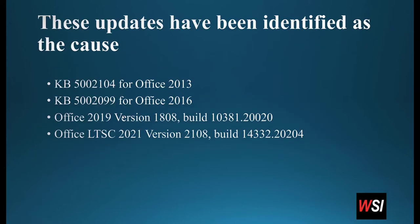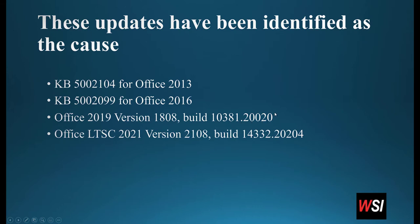There are several updates that have been identified as the cause. If you're using Office 2016, the KB Knowledge Base article defines what the update was — it was this update. If you're using 2013, it might have been this update. Office 2019, version 18, then it was this build. A build is basically the version number of the update that was put out. I don't think many of you will be using LTSC 2021.